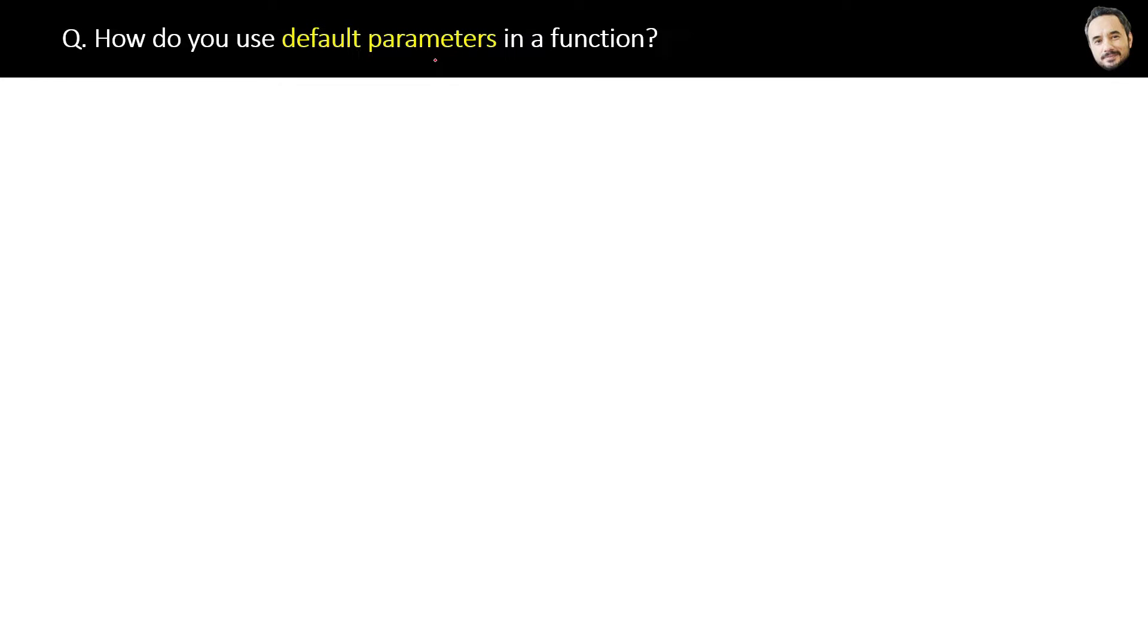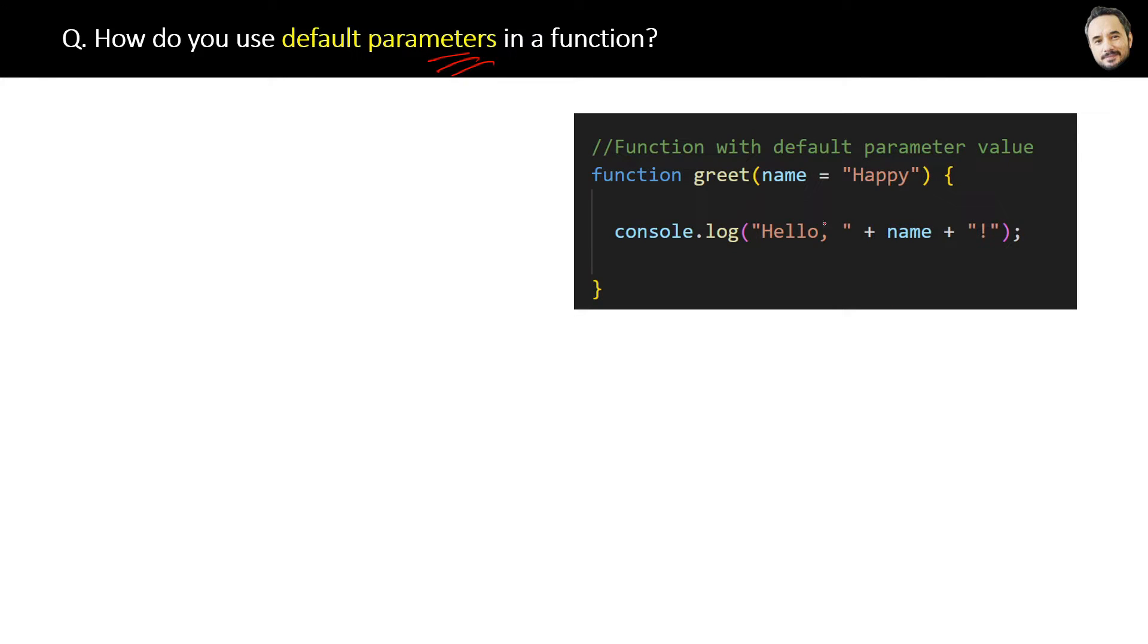How do you use default parameters in a function? One more question on parameters and arguments. Here is the code of a function with a default parameter name. What does this mean? It means